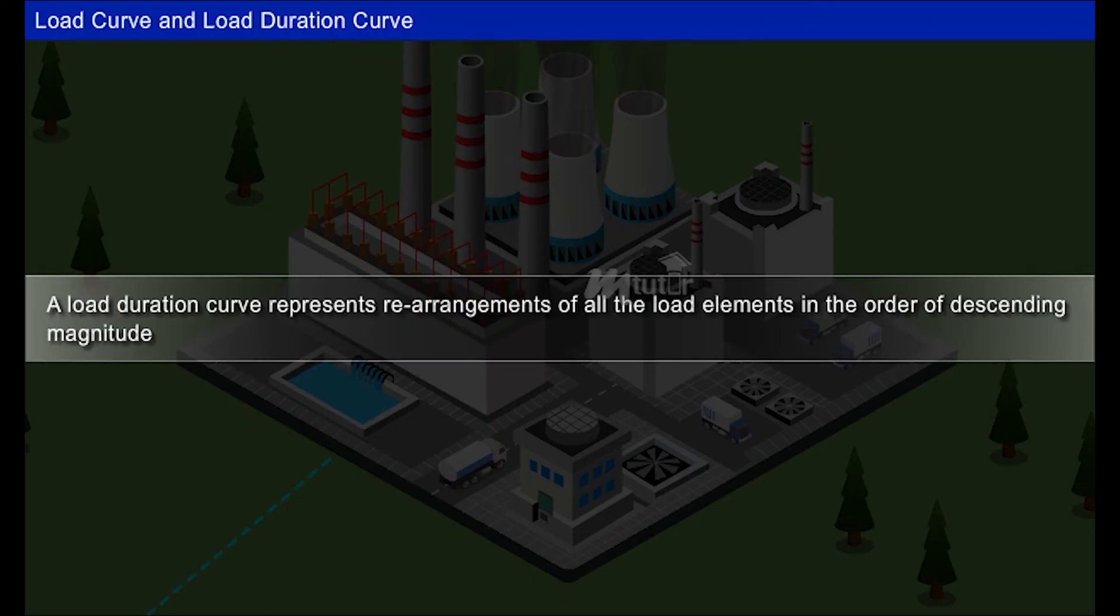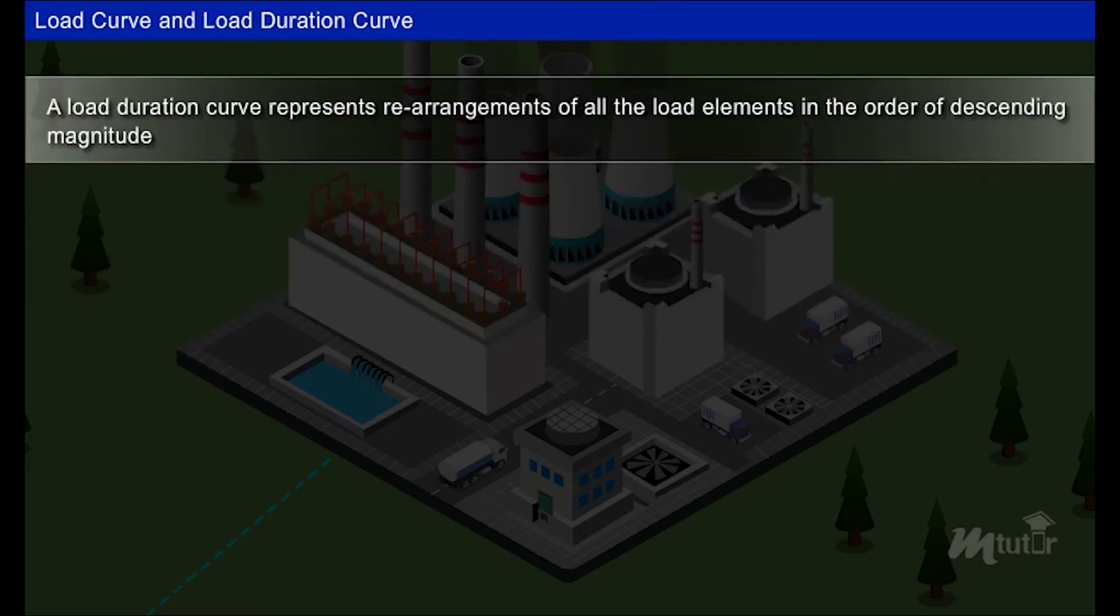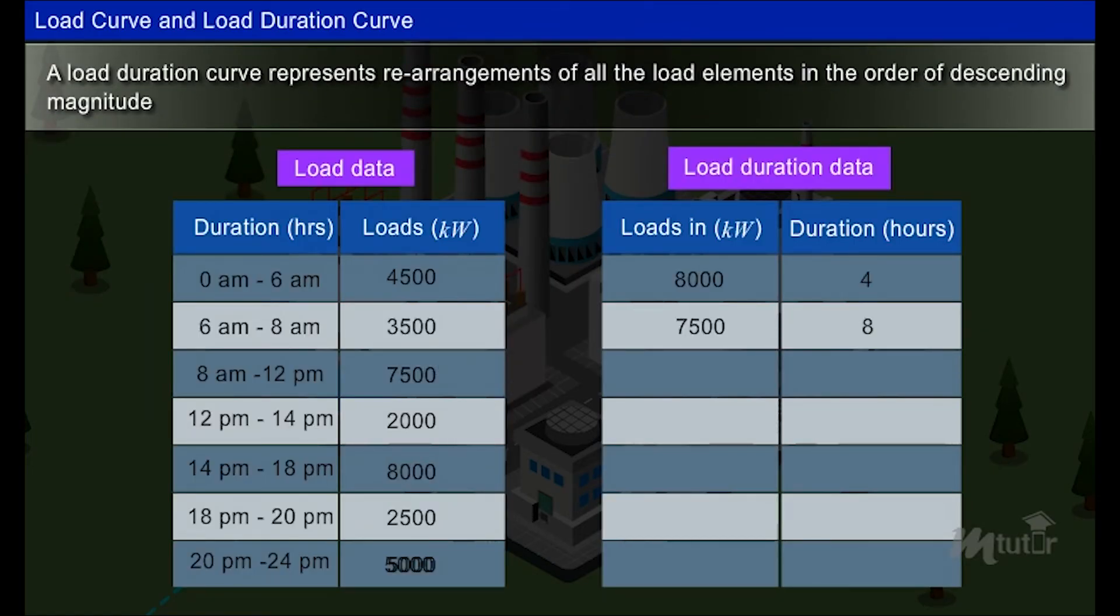A load duration curve represents rearrangements of all the load elements in the order of descending magnitude. A load duration data is obtained by arranging the load values in the descending order from the load data and by cumulatively adding the load duration.